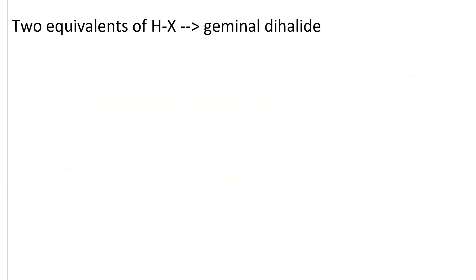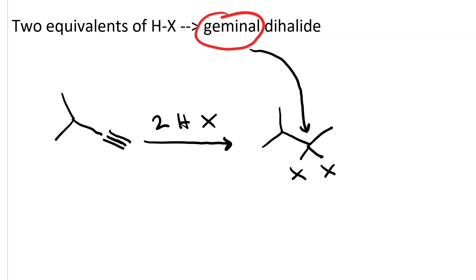If we react a terminal alkyne with two equivalents of haloacid, we get the geminal dihalide. Geminal for twin, referring to both of the halogen atoms adding in the same position.